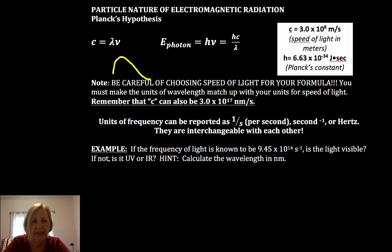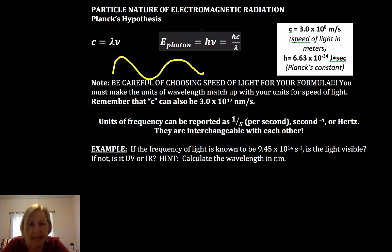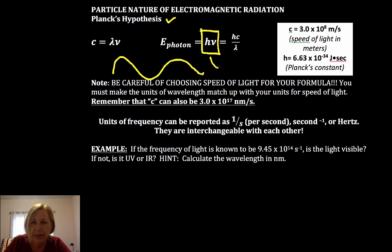We're certainly used to thinking about light as a wave, but what Planck proposed based on experimentation is that we can think of light as a little packet of energy called a photon. So we're going to use E for energy, H is Planck's constant in joules per second.